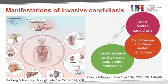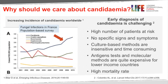Manifestations of invasive candidiasis, especially deep-seated candidiasis, may be related to direct inoculation of Candida into a sterile site as a complication of surgery — such as gastrointestinal or neurological surgery — or you may have a patient with undiagnosed candidemia and then dissemination of Candida from the blood to different organs like the eyes, central nervous system, or endocarditis.